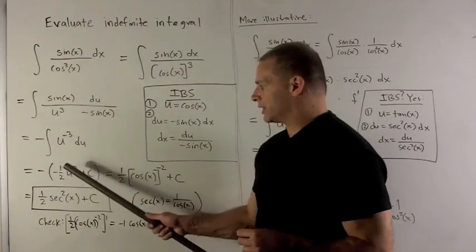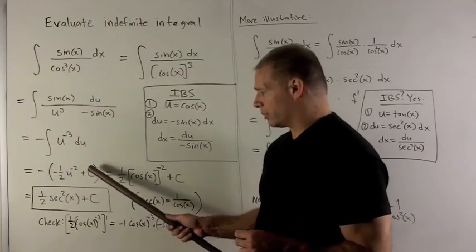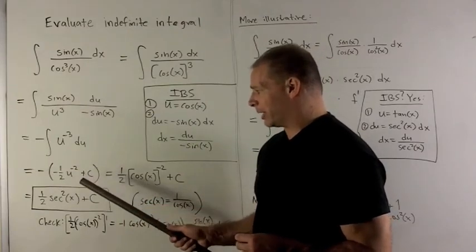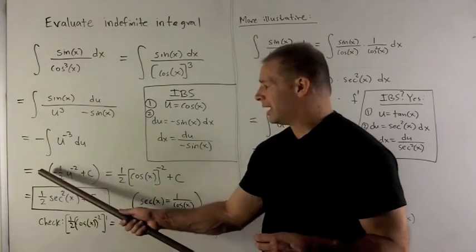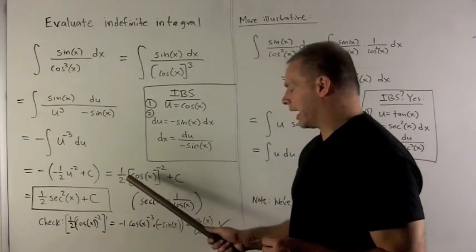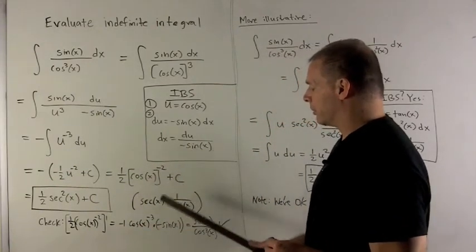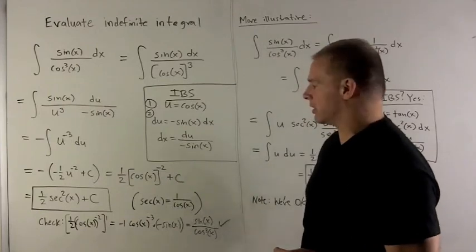I put everything in parentheses, so that way if there's more than one term here, we'll pick up that minus sign correctly, but it's not an issue here. The minus signs cancel, giving me 1 half cosine to the minus 2, and then the constant we can multiply by whatever. It's still going to be the same constant.